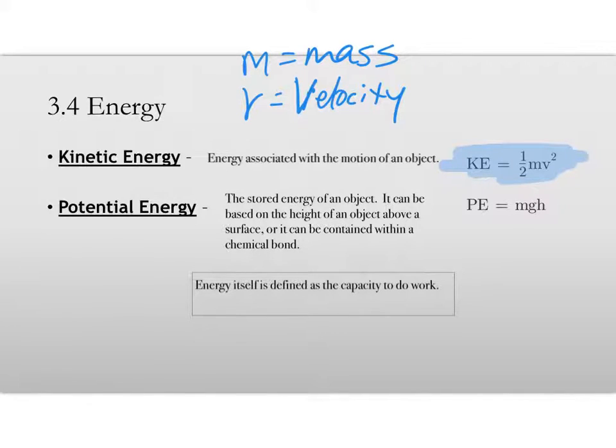The potential energy is the stored energy of an object. It can be based on the height of an object that is above a surface, or it can be, more importantly for this class, associated with the amount of energy stored within a chemical bond.